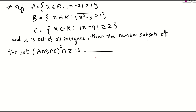Hello students. Let us see what the question is. Set A is the set of real numbers such that |x - 3| > 1. Set B is the set of real numbers such that √(x² - 3) > 1. Set C is the set of real numbers such that |x - 4| ≥ 2. Also, Z is the set of all integers. We need to find the number of subsets of Z ∩ (A ∩ B ∩ C)^c. To do that, we first need to find the elements in sets A, B, and C one by one.